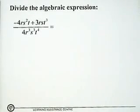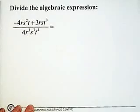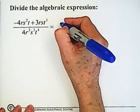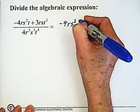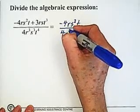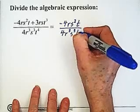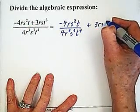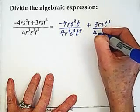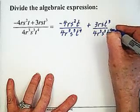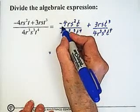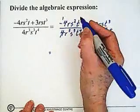Here we have one of those questions which is an addition. What we're going to want to do is put each of these over its own denominator — that's our very first step. So we have minus 4rs²t over 4r³s³t⁴, plus 3rst³ over 4r³s³t⁴. That's the first step, and then we just do cancellations. So we have minus 4 divided by 4 — these two are gone and we're left with minus 1.